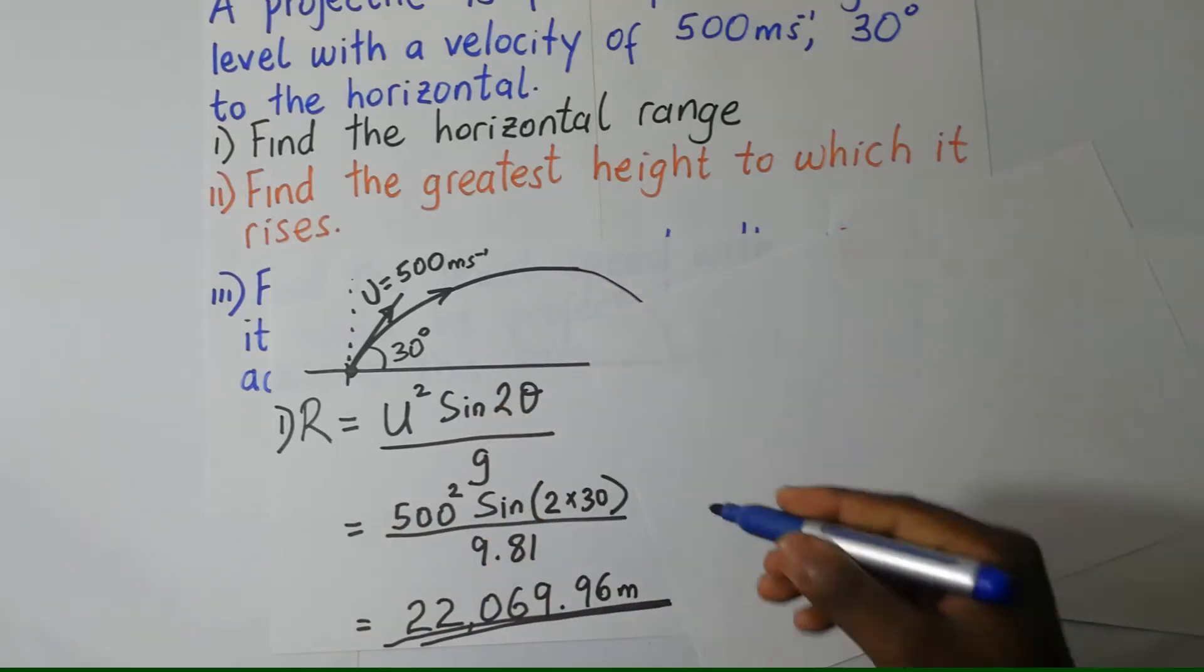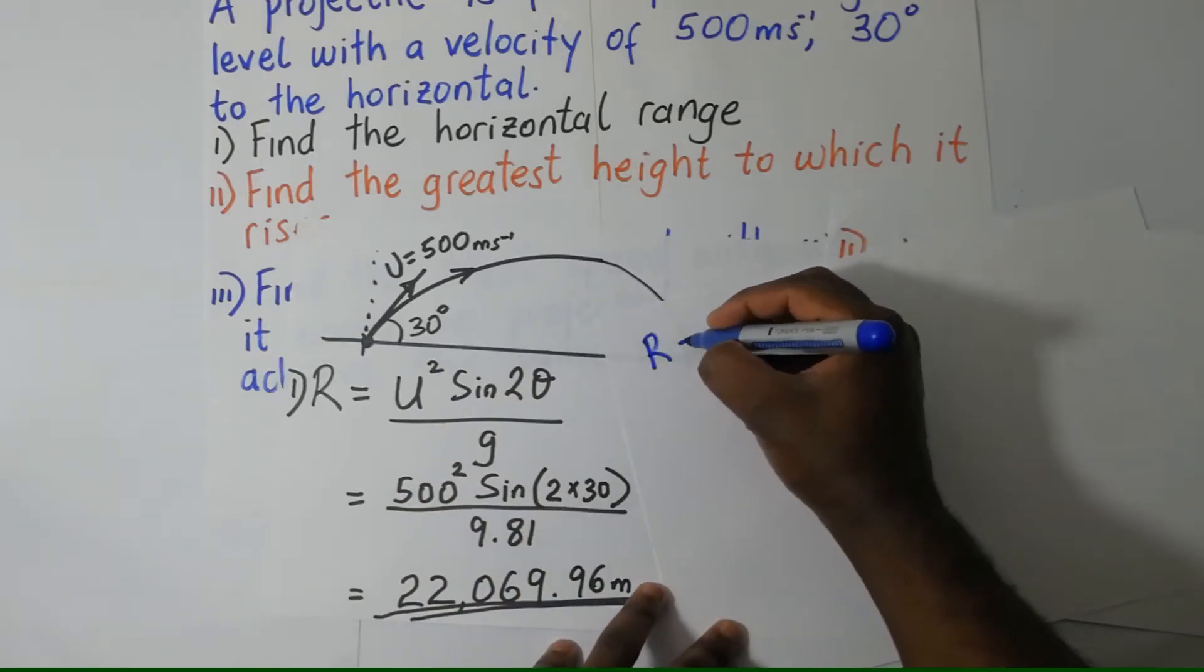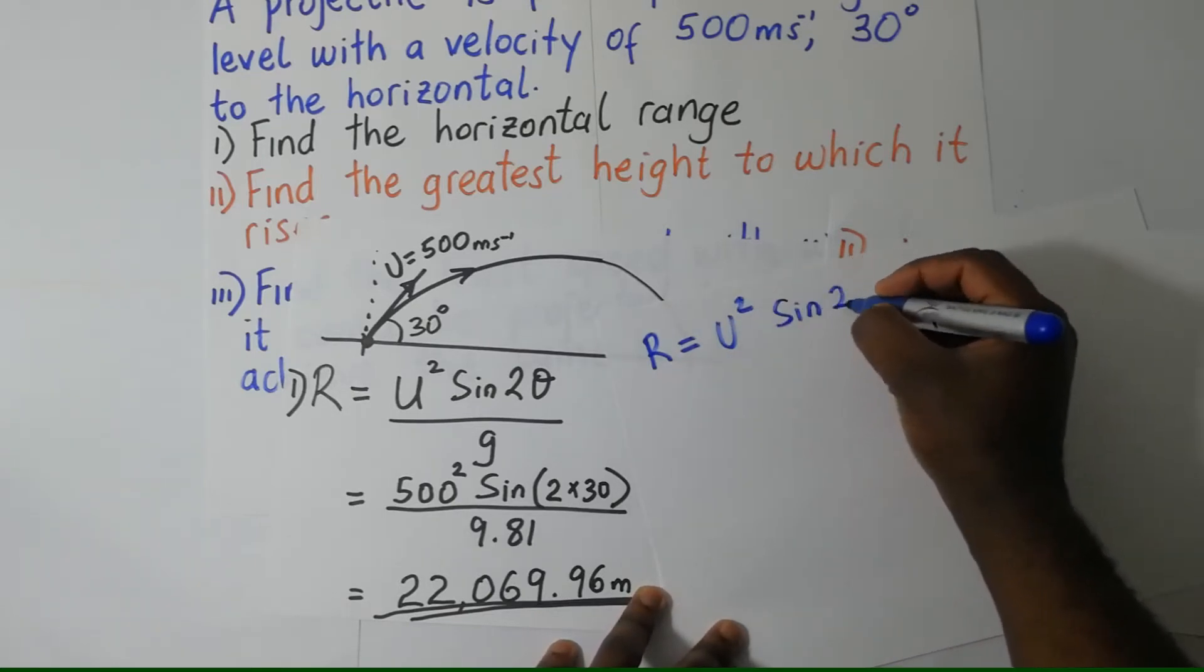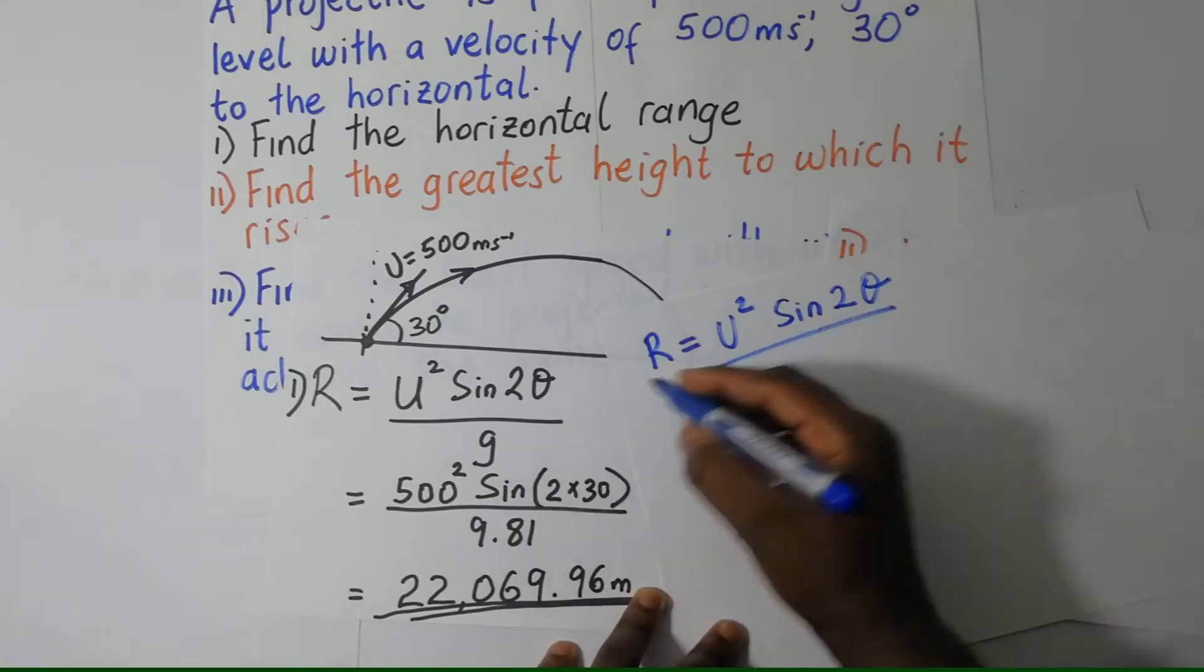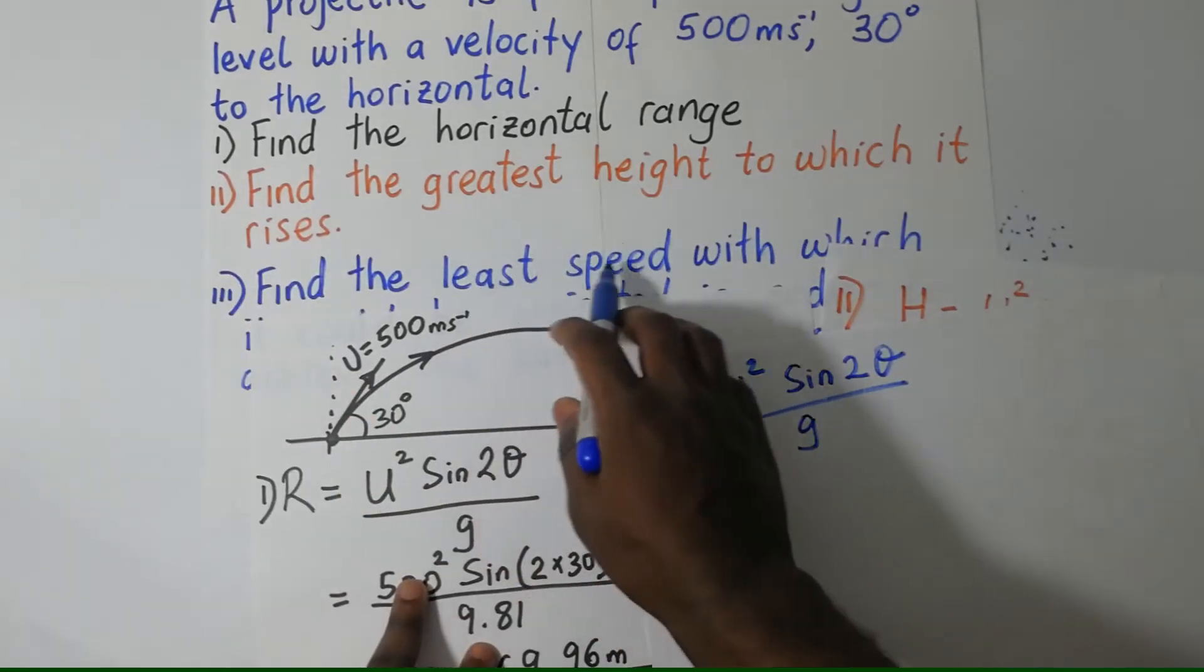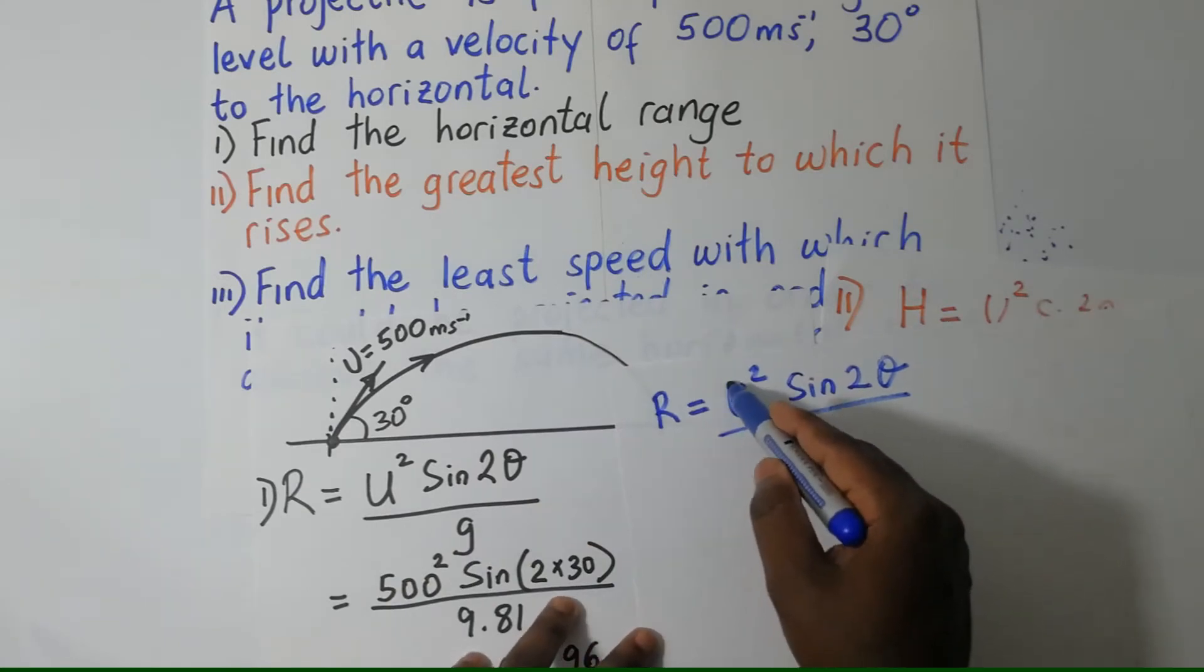We're talking about range here. We know that our value of range is given by U squared sine 2 theta divided by G. The question says, find the least speed, find the least value of U.